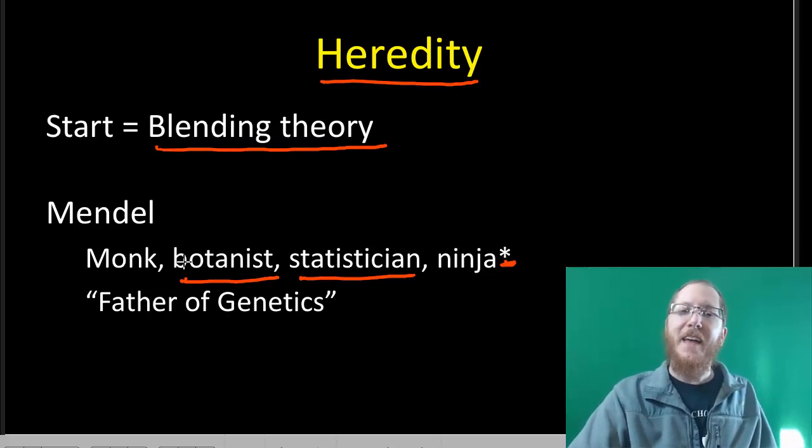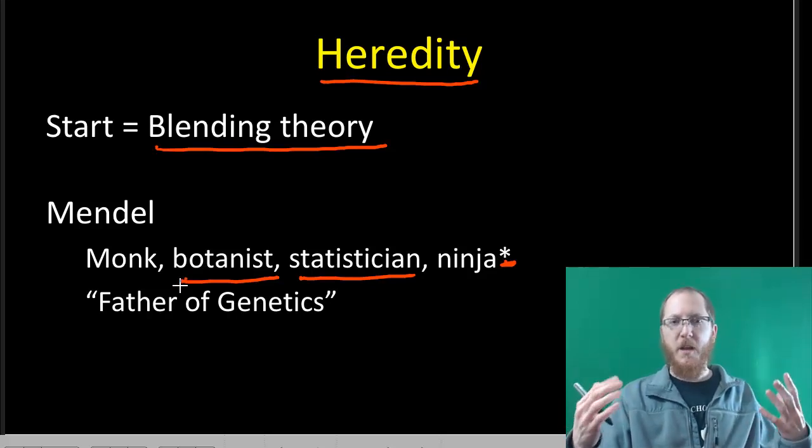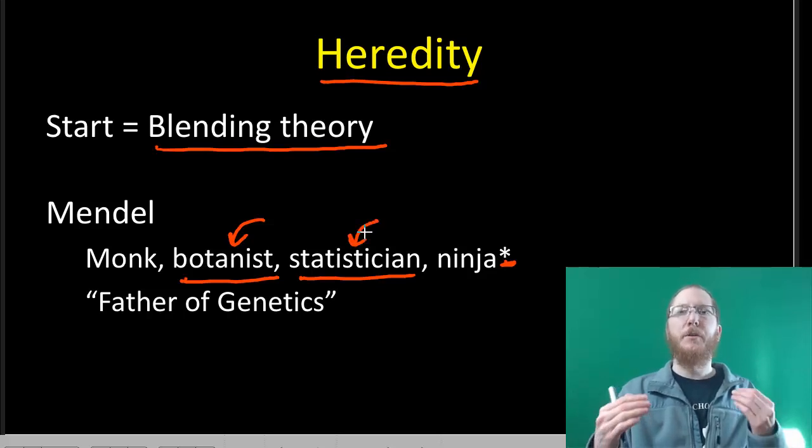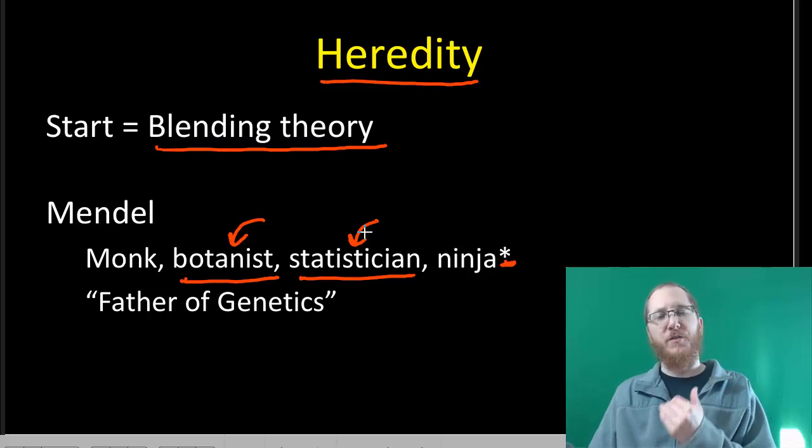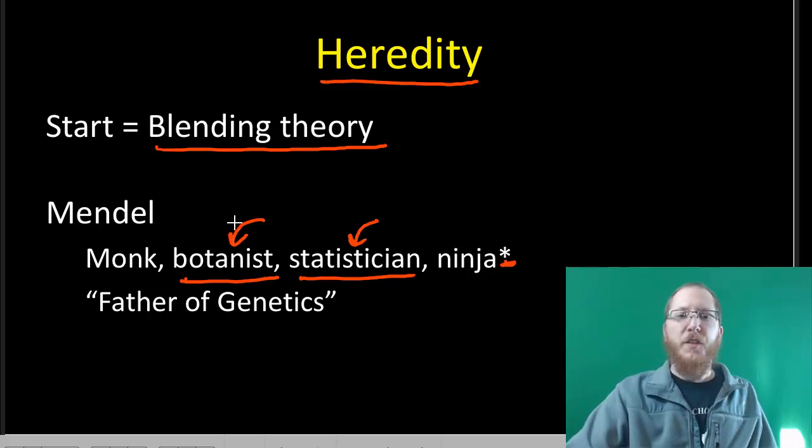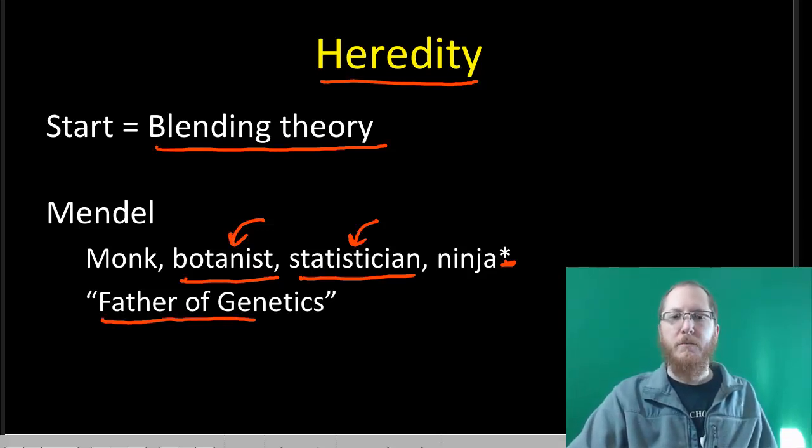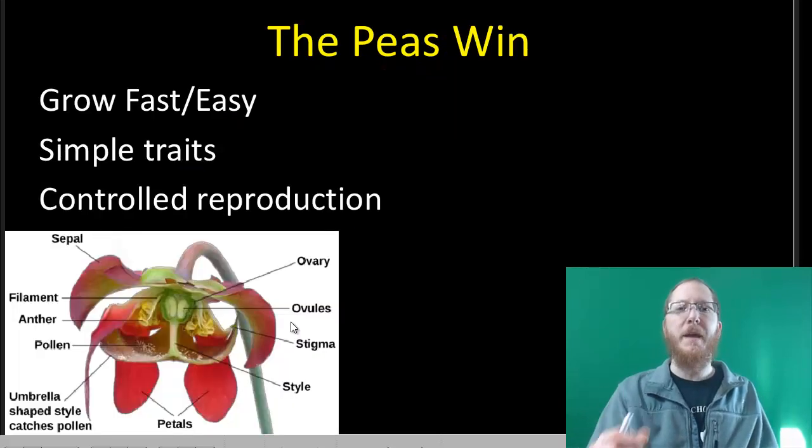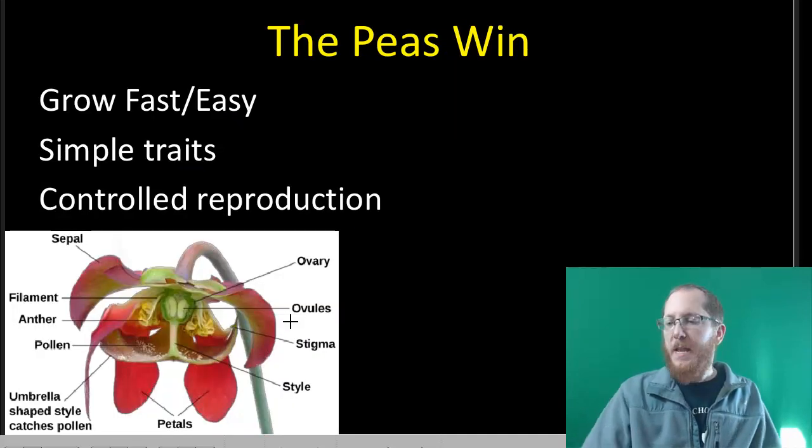Because he had this skill set, he was able to grow a bunch of pea plants, which we'll discuss coming up—that's using his botany skill. And then he was able to analyze the offspring that they produced using his mathematical skill and knowledge, so that he was able to figure out genetics as we know it. If you see someone say the father of genetics, they're talking about Mendel, because he was the one that came up with at least the most basic rules that there are.